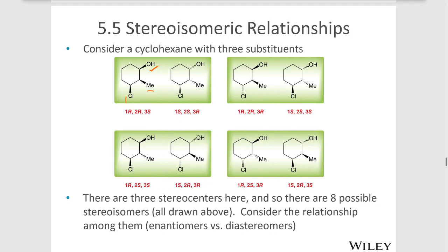We can have all of the substituents coming out, or all of the substituents going back. If we swap all of the wedges and dashes, we get the enantiomer. These two are not the same — they are enantiomers. You could slide the left one over the right one; they'd be mirror images, but you can't flip them over and superimpose them. They're non-superimposable mirror images, so they are enantiomers.